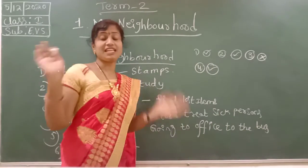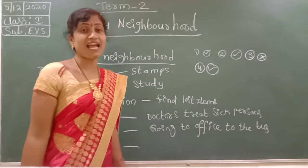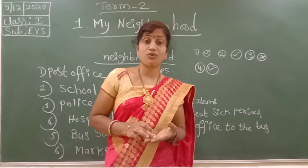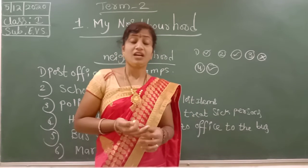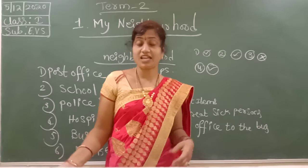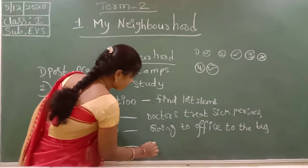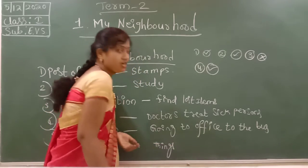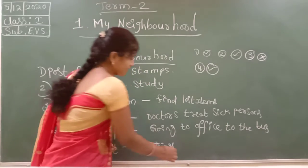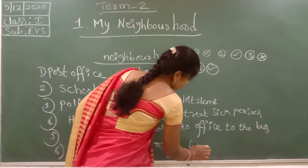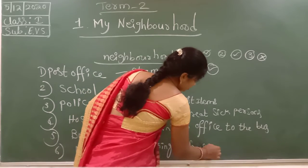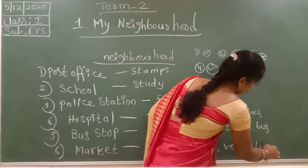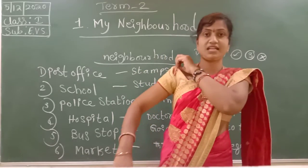Market: so many things are there in that market. We can buy vegetables, fruits, kirana, different different things — so many clothes, different different items we can buy in that market. Fruits, vegetables, milk, clothes — so many different different items we can buy in that market.